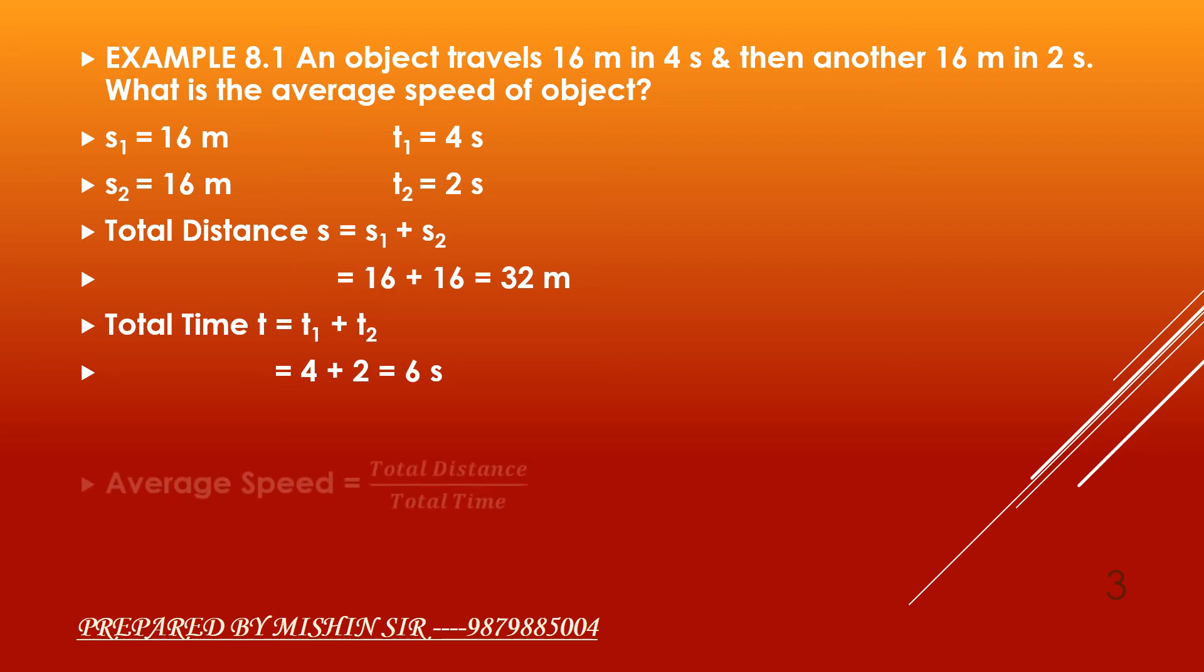To find average speed, which is equal to total distance upon total time. Substituting the values, 32 upon 6, we get 5.33 meter per second.